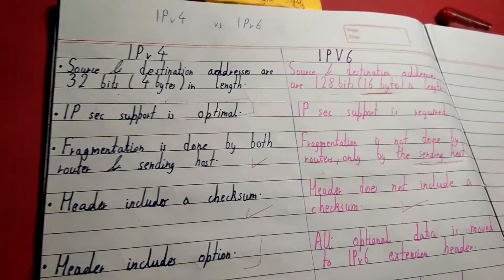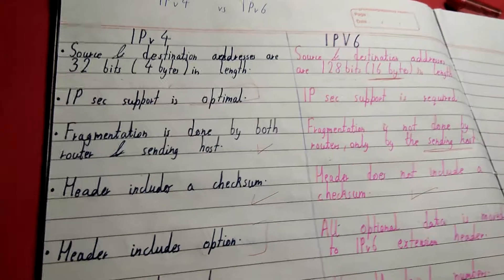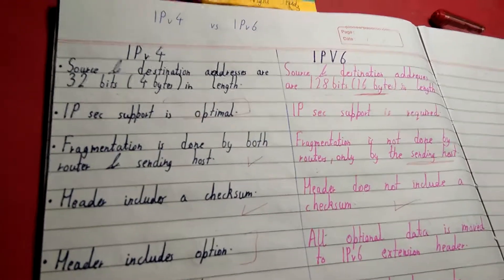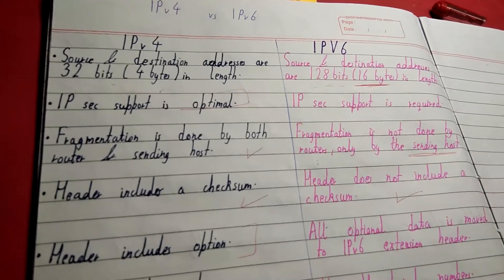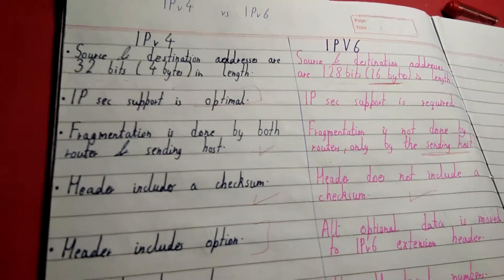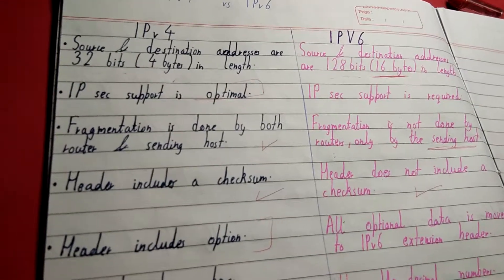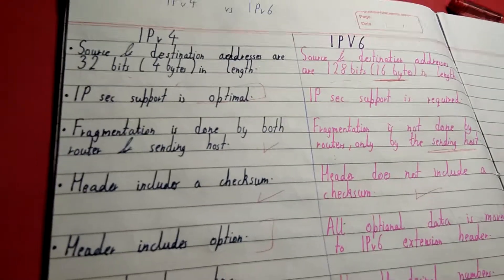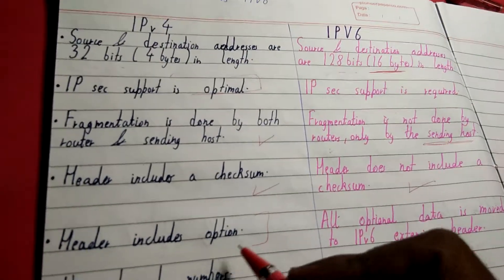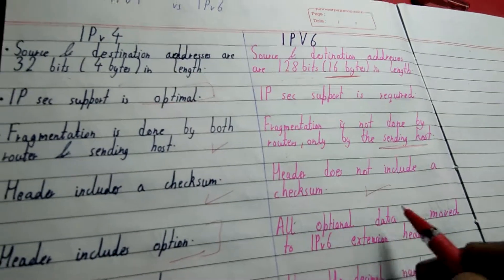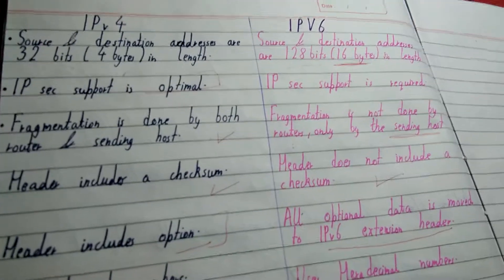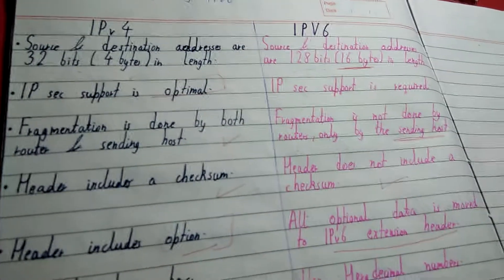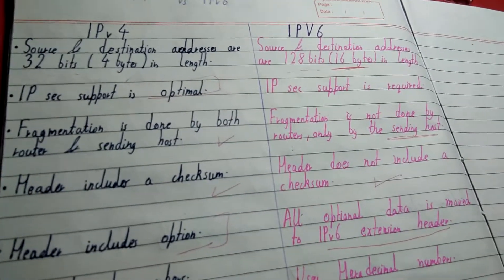The main header of IPv4 includes options, which makes it very tough when IPv4 communicates across different platforms — it is difficult to categorize the necessary parts of the header. IPv6 is improved in this regard: all optional data is moved to the IPv6 extension header, and the IPv6 header contains only the necessary parts.